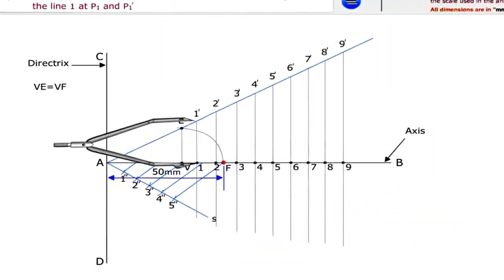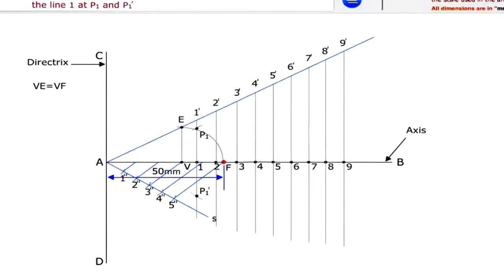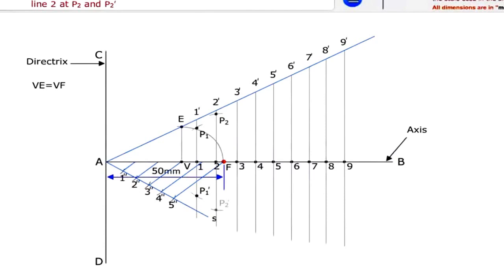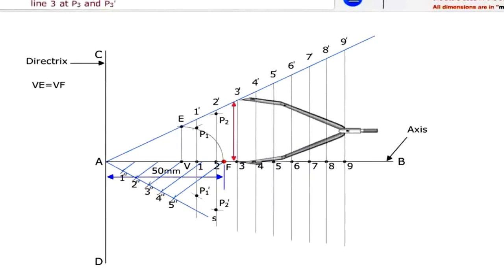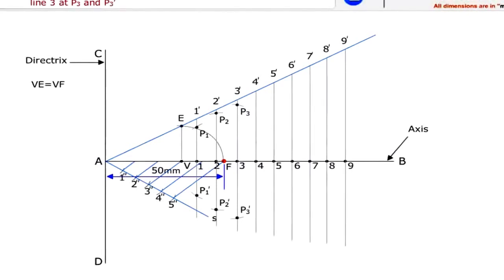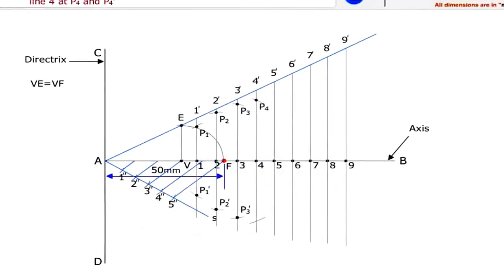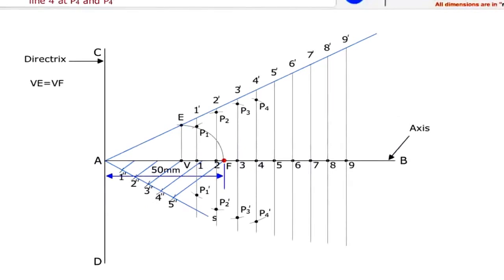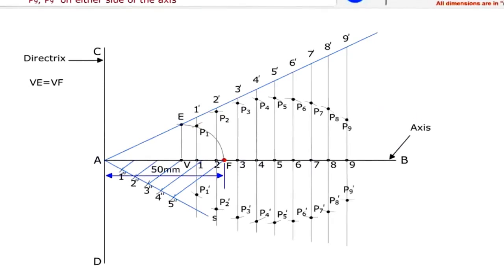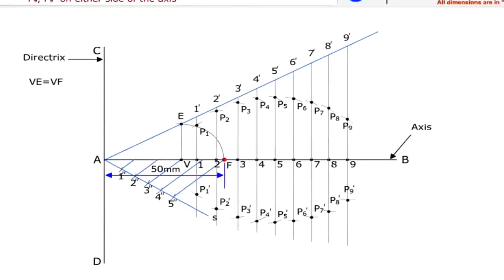With radius 1-1' and center F draw arcs intersecting line 1 at P1 and P1'. With radius 2-2' and center F draw arcs intersecting line 2 at P2 and P2'. With radius 3-3' and center F draw arcs intersecting line 3 at P3 and P3'. Similarly, locate the points P5, P5' on either side of the axis.